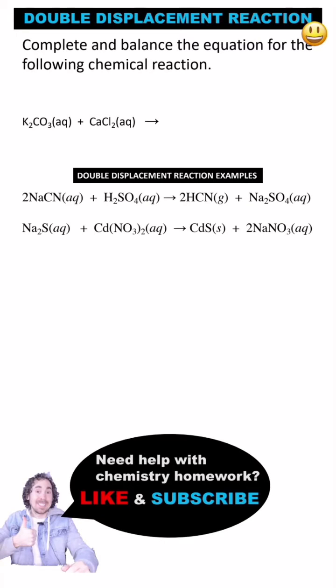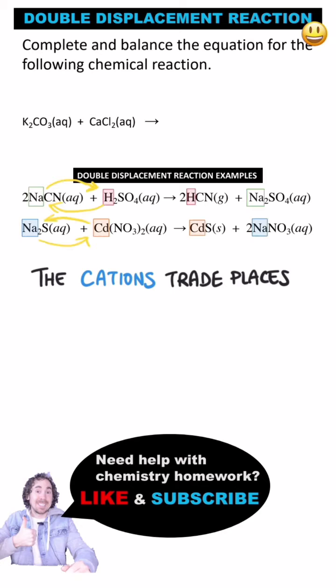A double displacement reaction is a chemical change involving two ionic compounds where their cations trade places with each other. The reactants are both dissolved in water and the reaction only occurs if a product forms that's not dissolved in water.